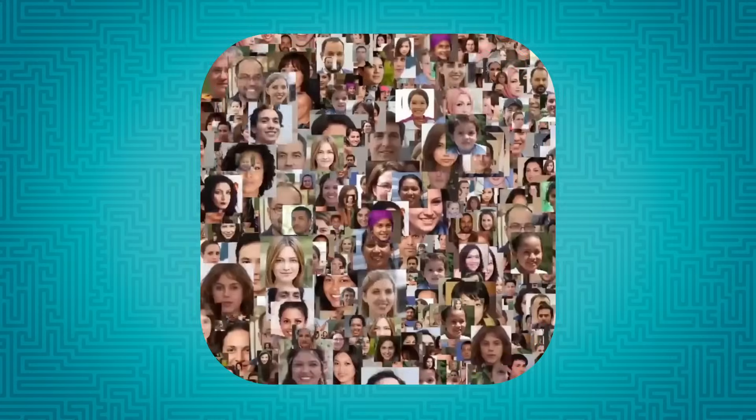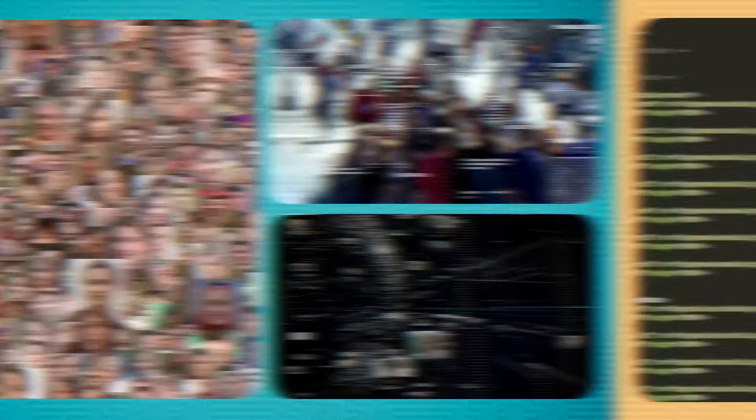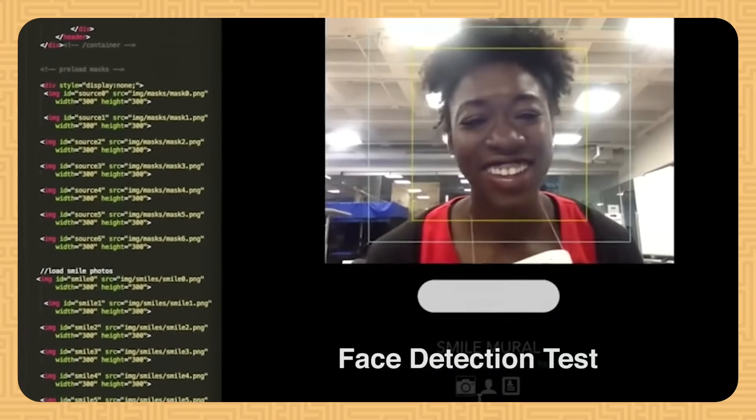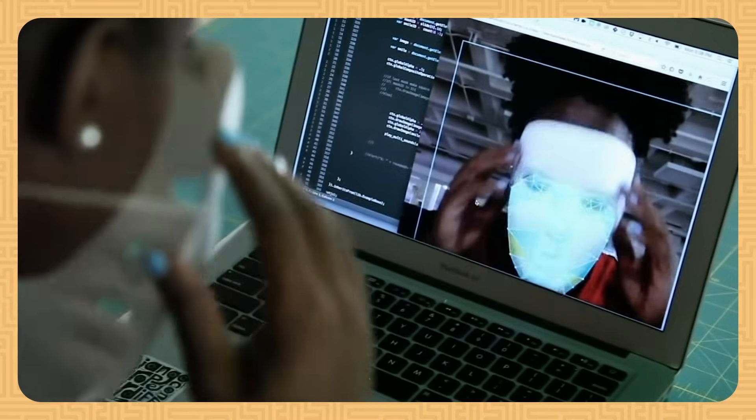It can take hundreds of thousands or even millions of labeled images to train a computer vision system, but sometimes even that's not enough. Some face recognition systems have trouble even seeing people of color because the system was primarily trained with photos of white people.